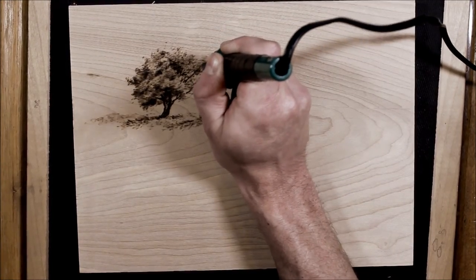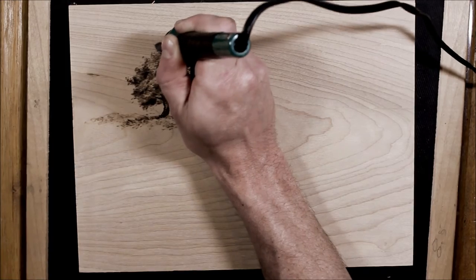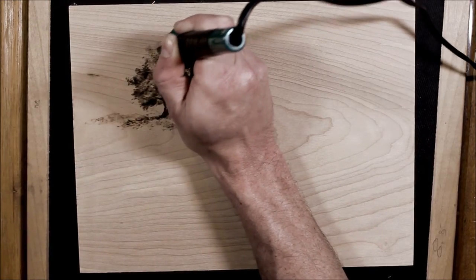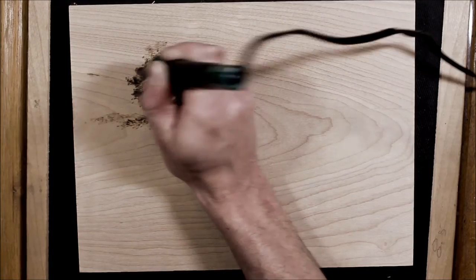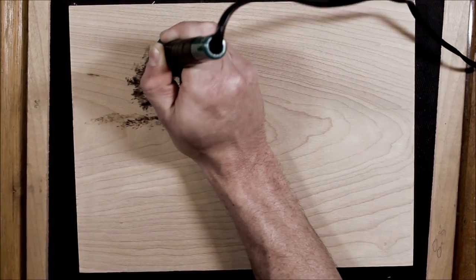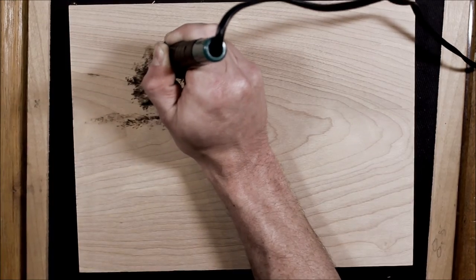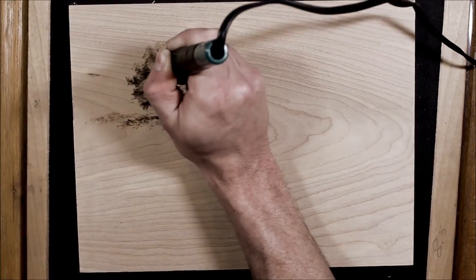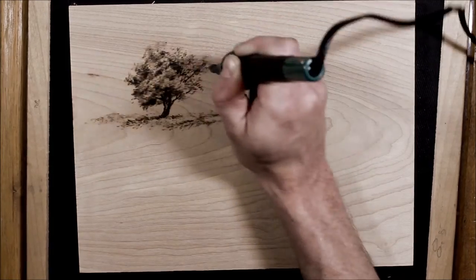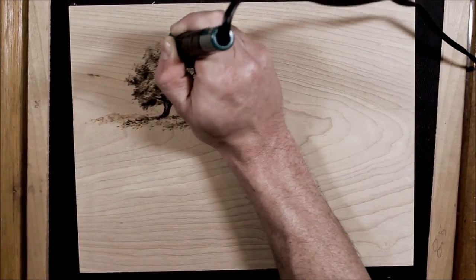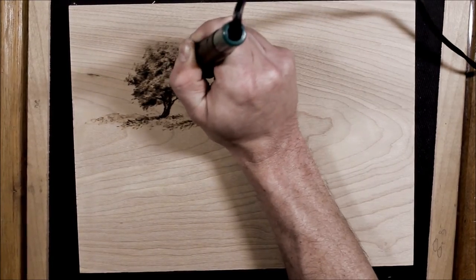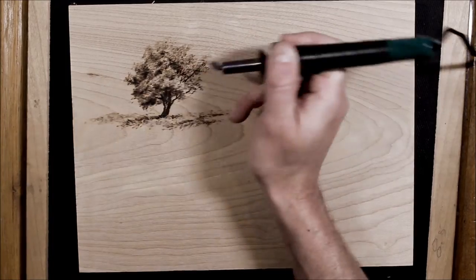Just kind of want these to get lighter as they go up. Want the focus to kind of be on the tree and underneath the tree. I just want to strengthen a couple of these limbs. I don't like a perfectly shaped tree. I like a few leaves to look like they're almost unattached.